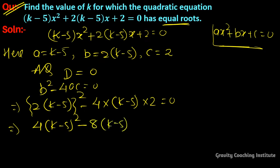Taking 4(k - 5) as common: 4(k - 5)[(k - 5) - 2] = 0. This gives us (k - 5)(k - 7) = 0.